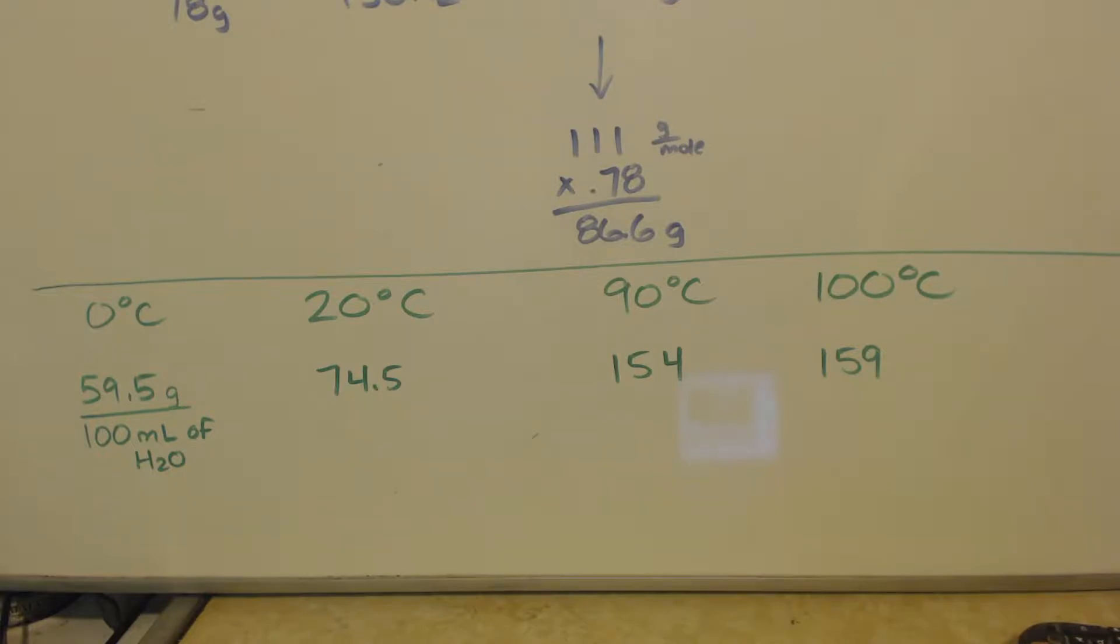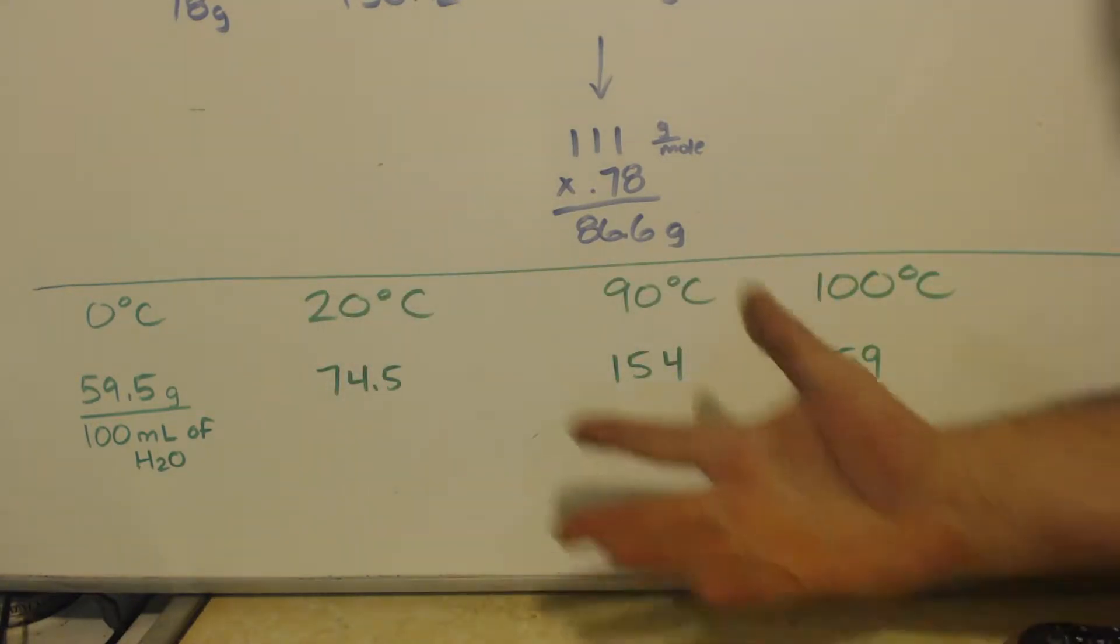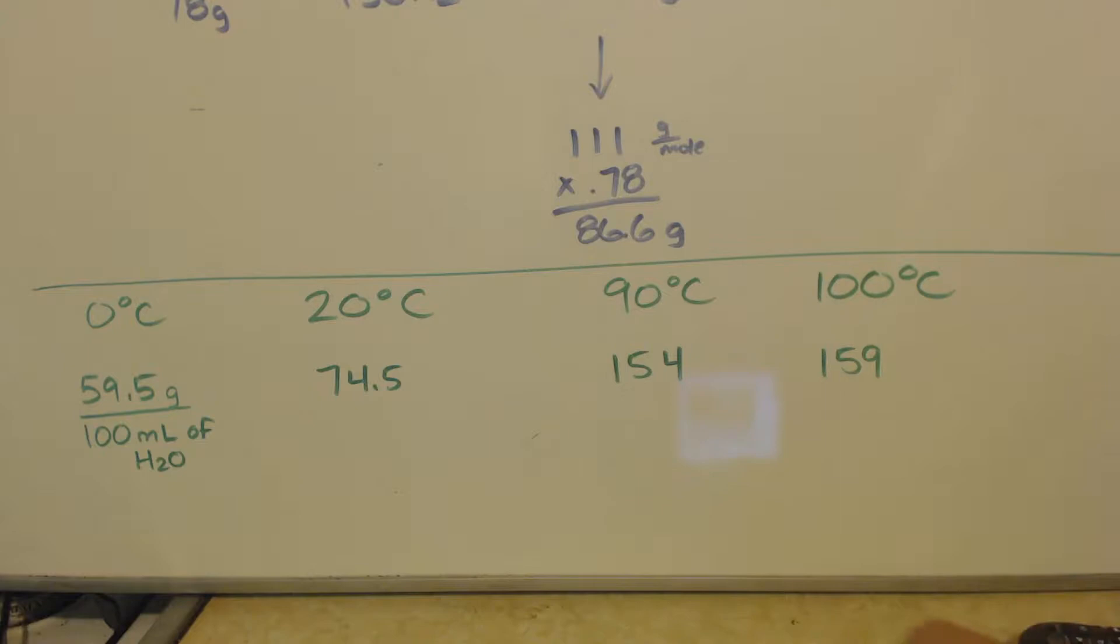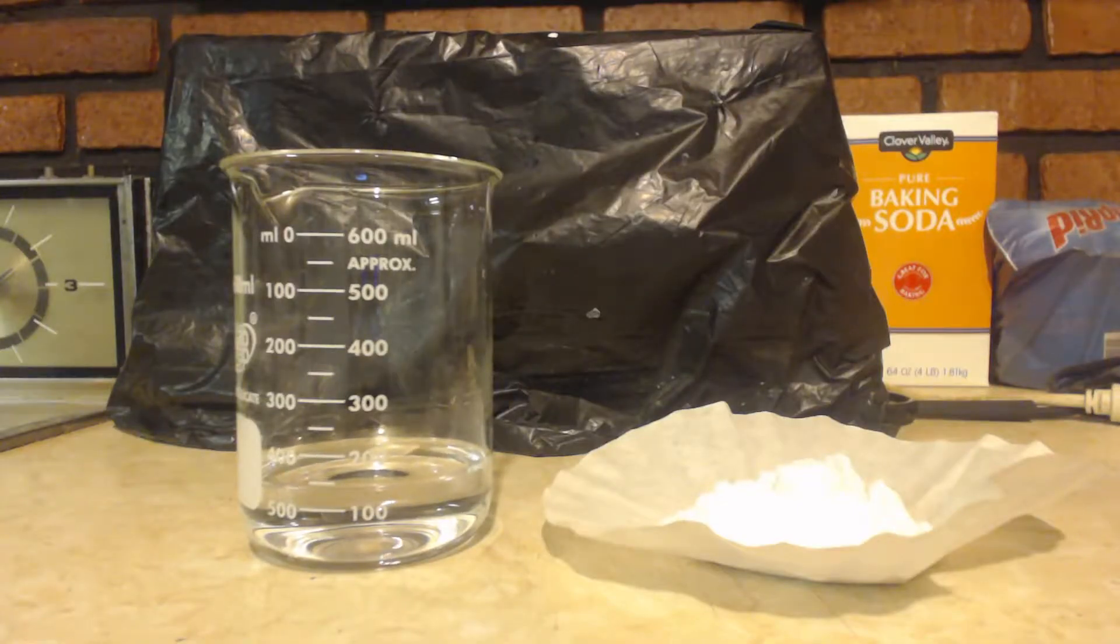If you recrystallize this from water, 59 grams will stay in solution and 100 grams will precipitate out, which is about two-thirds. After normal recrystallization, as soon as it starts crystallizing you take it off the heat. I'm gonna keep heating it up and get rid of a lot more water.